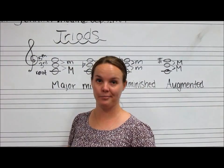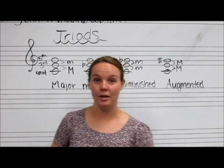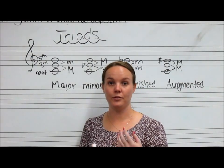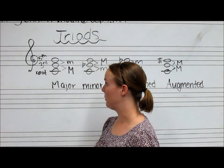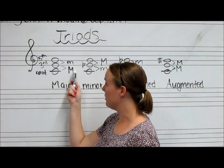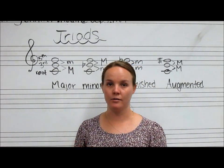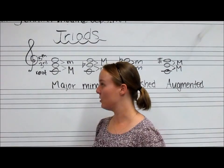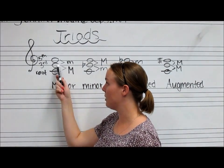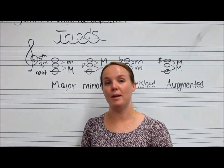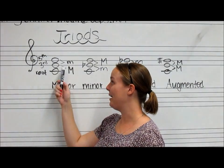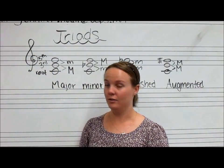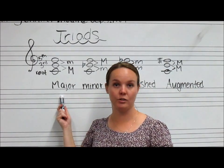Let's talk a little bit about triad quality. Triads are made up of intervals of a third stacked on top of each other, and whatever the quality of those intervals are will determine the quality of the triad. So if you have between your root and your third the interval of a major third, and between your third and fifth the interval of a minor third, you're going to have a major sounding triad.